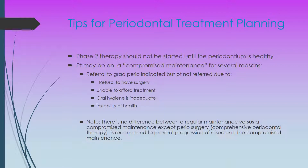As for phase two: therapy should not be started until the periodontium is healthy. You don't want to start placing crowns when you have an unstable periodontium — it's a disservice to the patient and the profession. Remember that the patient may be placed on a compromised maintenance for several reasons. We refer to grad perio when indicated, but sometimes patients don't want surgery, are unable to afford treatment, have inadequate oral hygiene, or have health instability. No matter the reason, document in the record that periodontal surgery is recommended, and note the limitation explaining why they are on maintenance and that their prognosis may worsen.